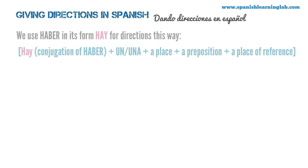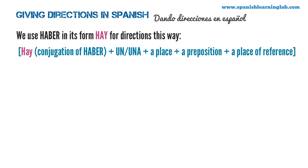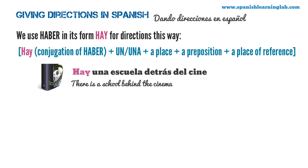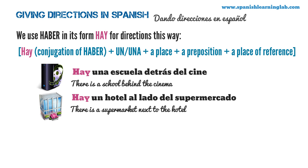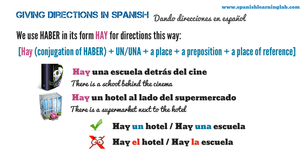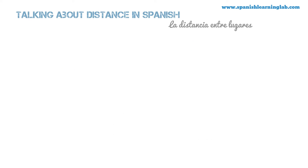We use haber in its form hay for directions this way: hay plus un or una, plus a place, plus a preposition, plus a place of reference. Here are some examples: Hay una escuela detrás del cine. Hay un hotel al lado del supermercado. Remember that hay means there is and there are in Spanish. We use un after hay when referring to a masculine noun like hotel — hay un hotel. For a feminine noun like escuela, we use una.